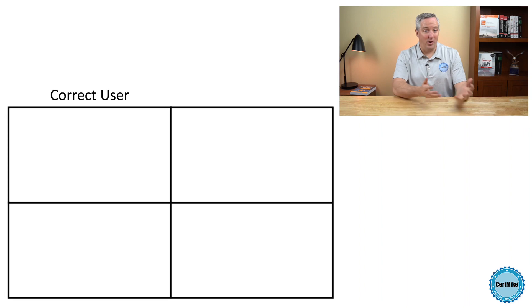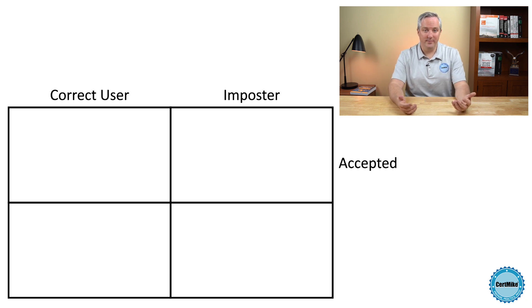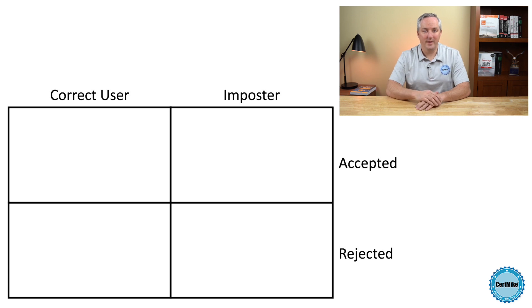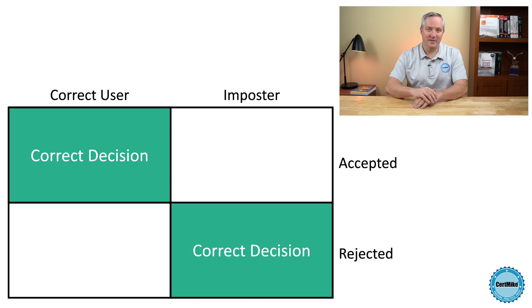This leads us to the different types of mistakes that biometric systems can make. When someone attempts to authenticate to a system, there are two possibilities: they either are who they claim to be, or they're not who they claim to be. And the system can make two decisions — it can accept the user's claim or reject the user's claim. What we want is for the system to accept users who are who they claim to be, and reject users who are not. Those are the correct decisions.